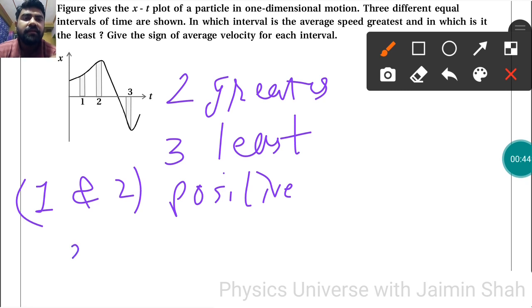Interval 3 has negative average velocity. Why? Because in interval 3, the position is negative, so the average velocity will be negative.